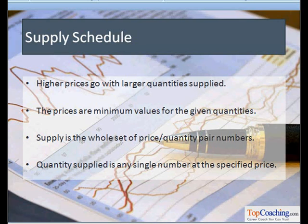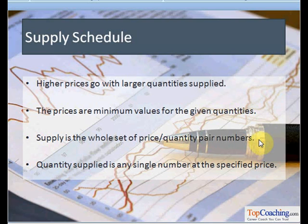We can make certain observations on the basis of the supply schedule. First, higher prices go with larger quantities supplied, as per the law of supply. Second, the prices are minimum values for the given quantities. Third, supply is the whole set of price-quantity pairs, so the quantity supplied is any single number at the specified price. Lastly, these numbers are hypothetical, presenting a what-if relationship.